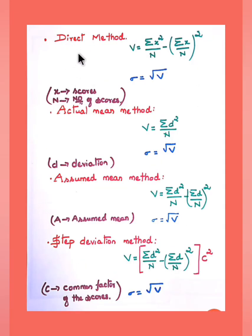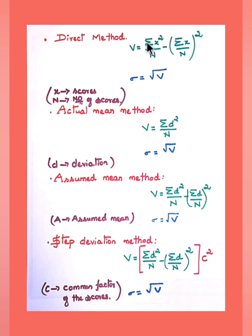There are mainly four methods to calculate standard deviation and variance: the direct method, actual mean method, assumed mean method, and step deviation method. In the direct method, the formula to calculate variance is: sigma x-squared by n, minus (sigma x by n) whole squared. We have already solved a sum from previous question papers — you can check the video playlist.